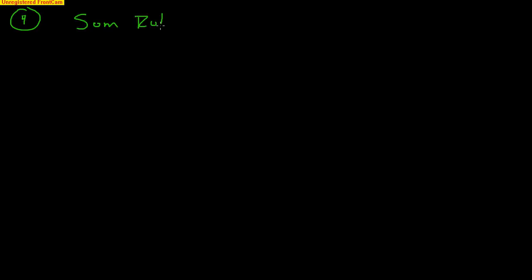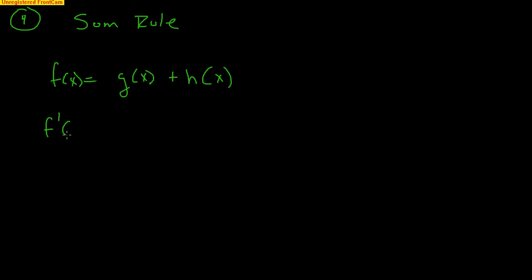The fourth rule is called the sum rule. Remember, sum means to add. If you have a function that is a combination of two functions — g(x) plus h(x) — to find the derivative, you simply take the derivative of g plus the derivative of h. You've got a function plus a function, and you just find the derivative of each and add them together.